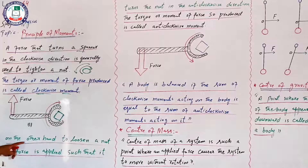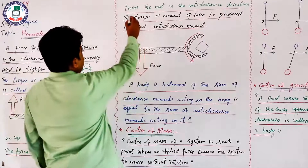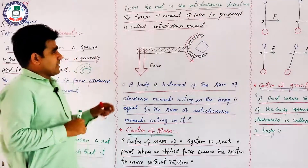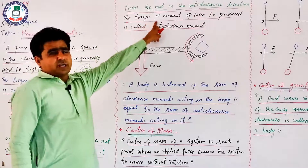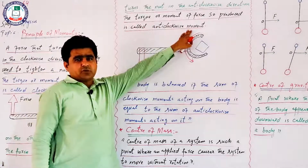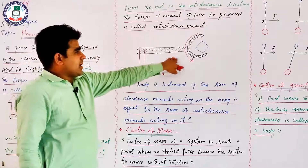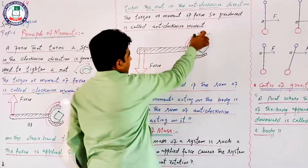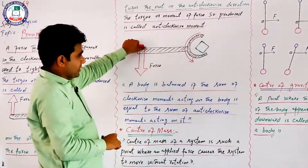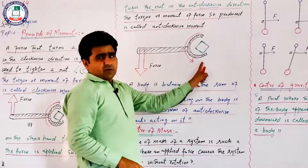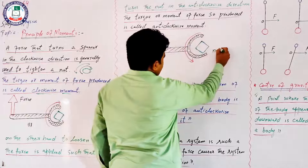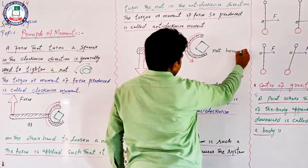On the other hand, to loosen a nut, the force is applied such that it turns the nut in the anti-clockwise direction। Anti-clockwise torque या anti-clockwise moment produce करना चाहते हैं तो spinner को anti-clockwise direction में move करवाएंगे। Anti-clockwise direction में downward force लगाएंगे तो torque anti-clockwise produce होगा, जिसे anti-clockwise moment कहेंगे — और nut loose हो जाएगा।